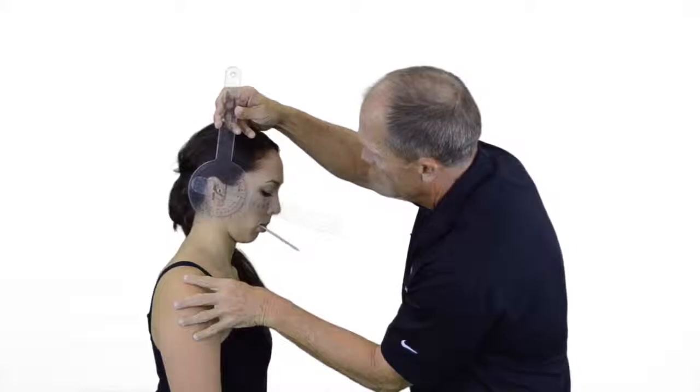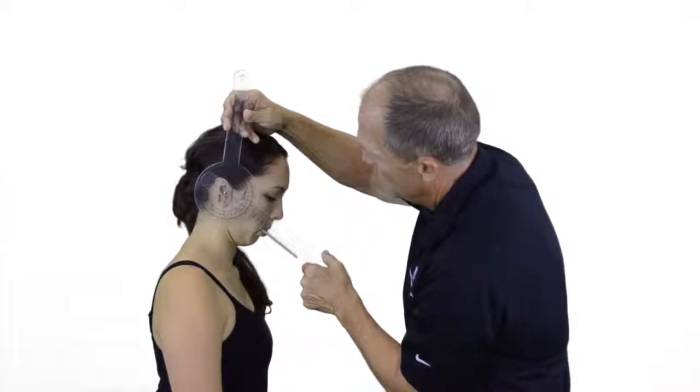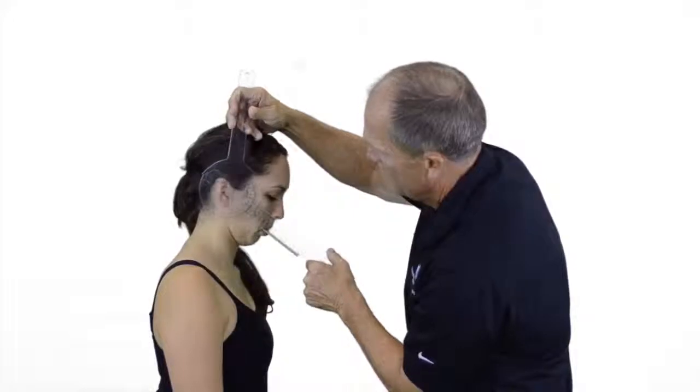As the patient flexes forward in that position, we would again parallel the measurement to the tongue depressor. This gives you assistance in your alignment for cervical spine flexion.